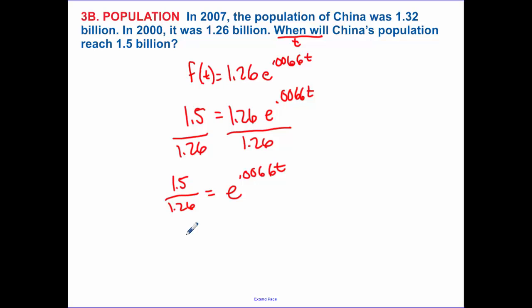So I have 1.5 divided by 1.26 equals e^(0.0066t). Now writing that as a natural logarithm, the ln of 1.5 divided by 1.26, notice how I didn't find anything yet, equals 0.0066t. I divide by that.